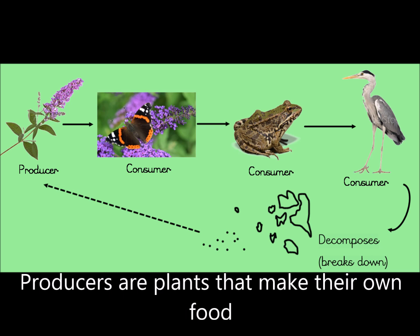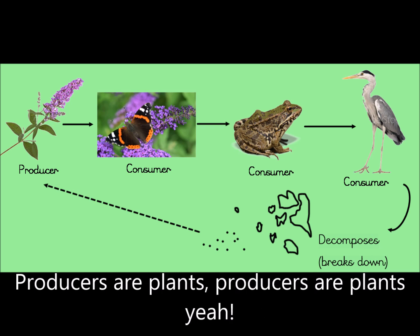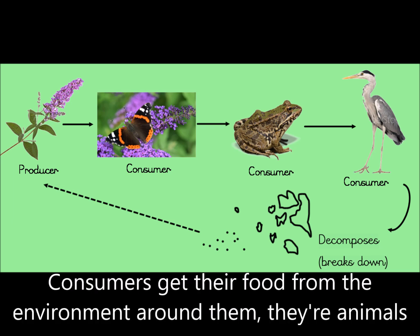Producers are plants, they make their own food. Consumers get their food from the environment around them.